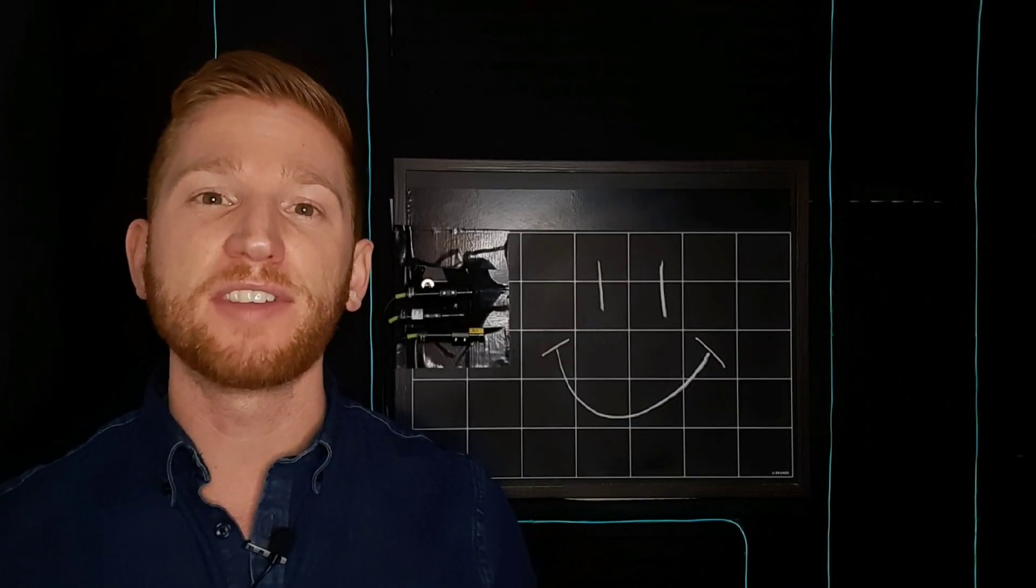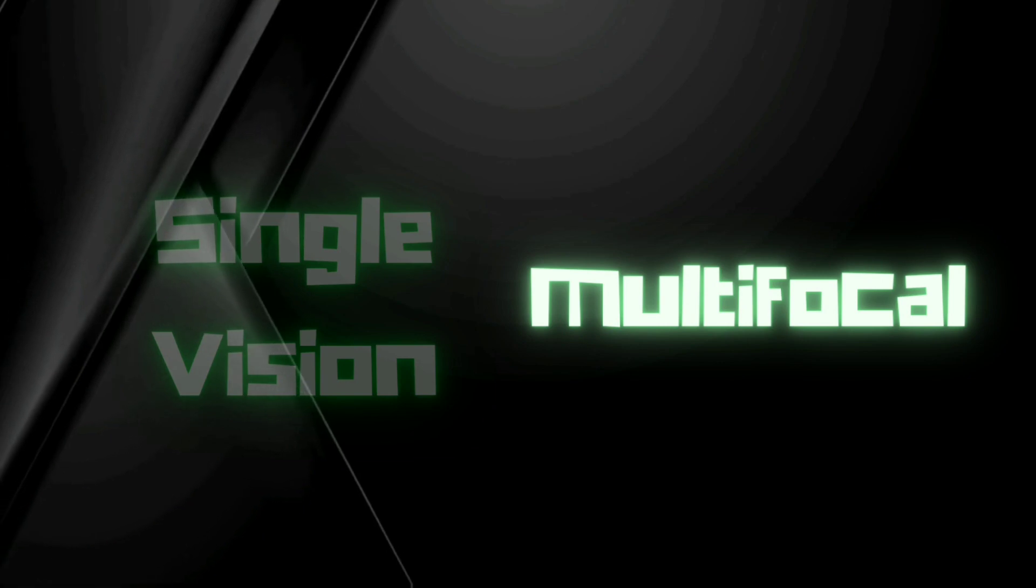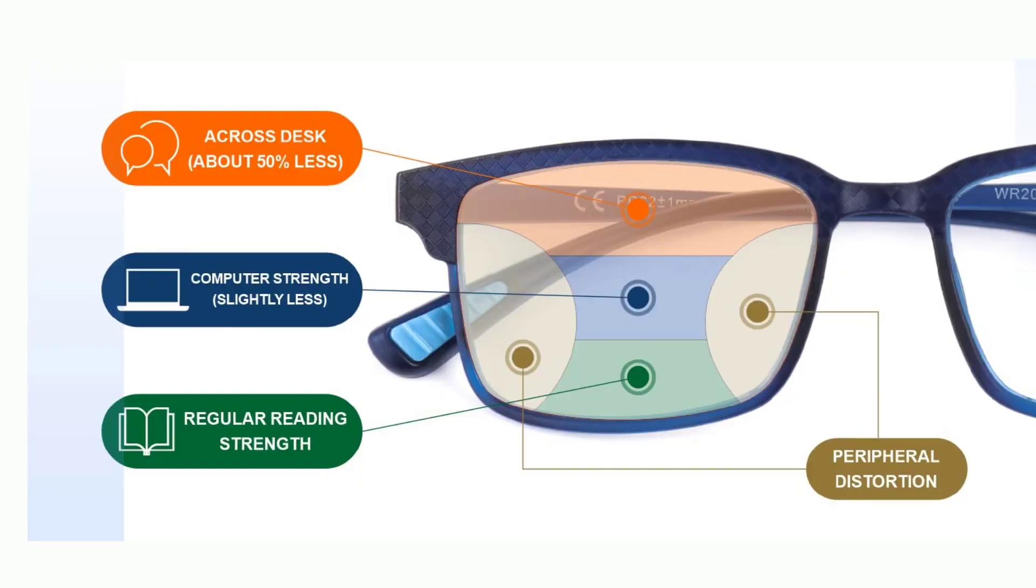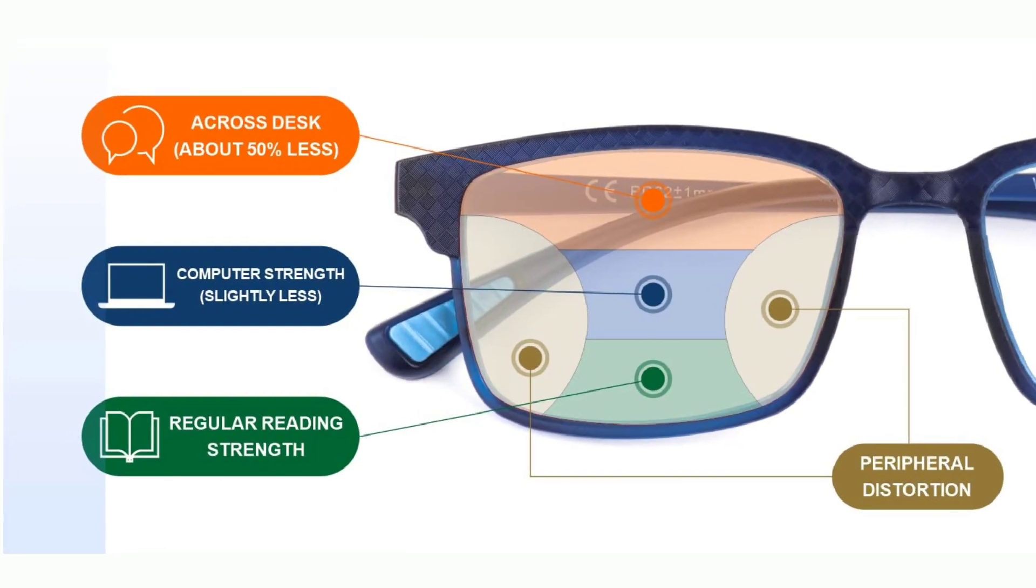Alright, that covers single vision lenses. Multifocal lenses are the same as what we just talked about, but they correct for your vision differently across different parts of the lens.